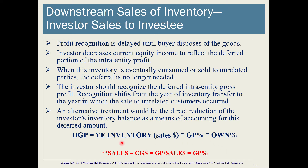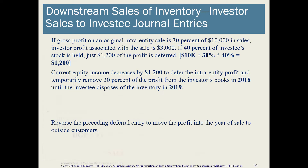I have the gross profit percentage formula here. Going back to principles of financial accounting: we take our sales, subtract our cost of goods sold, and that equals gross profit. Then we take that figure and divide it by sales to get the gross profit percentage of sales. In the example, the gross profit percentage is already given. The ending inventory is $10,000, and 30% of $10,000 is $3,000 — the profit associated with the sale. With a 40% interest in the investee, the amount of deferred gross profit is $1,200.